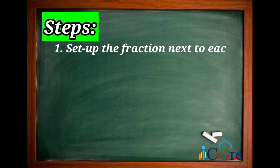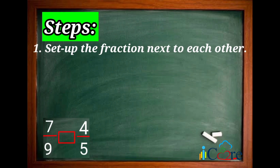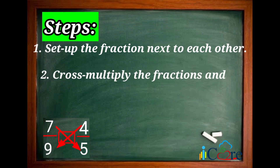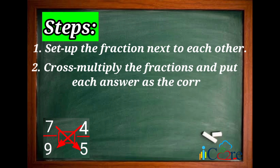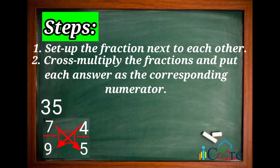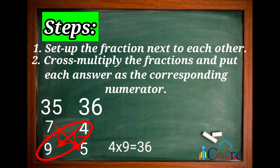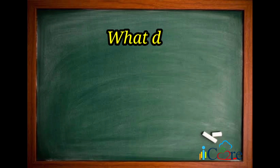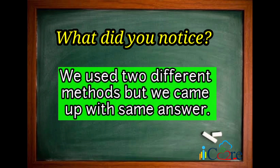Set up the fractions next to each other. Then, cross multiply the fractions and put each answer as the corresponding numerator, not the denominator. 7 times 5 is equal to 35. 4 times 9 is equal to 36. Since 35 is less than 36, the first fraction is less than the second one. What did you notice? We used two different methods, but we came up with the same answer.